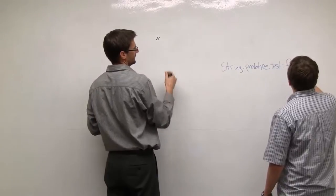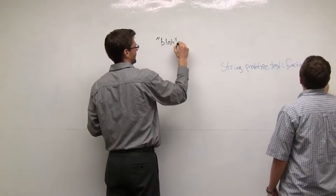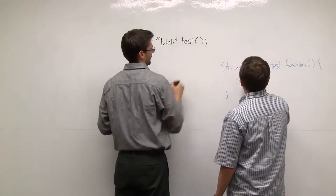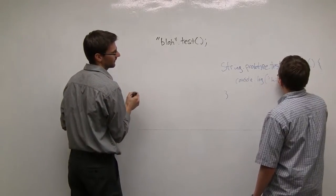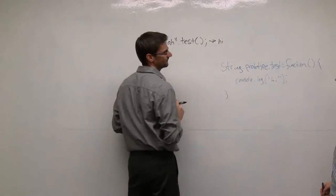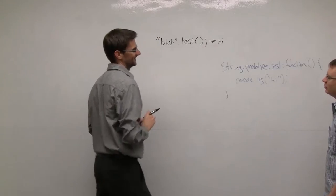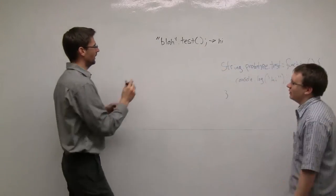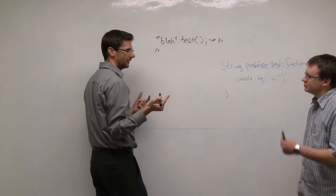If you write a function on String.prototype and then write a string and say dot test, that would run and return — for example — pi. That's the first gotcha. It's pretty compelling — this string is acting like an object, it has a method on it.